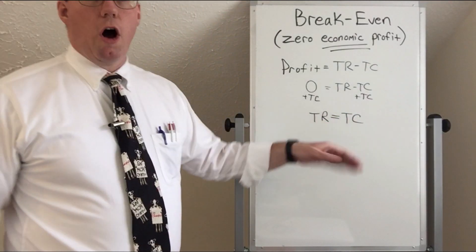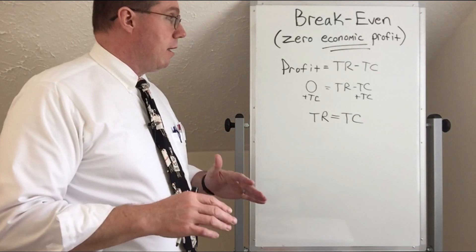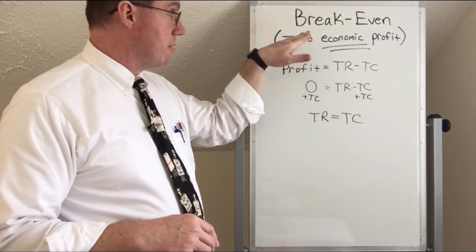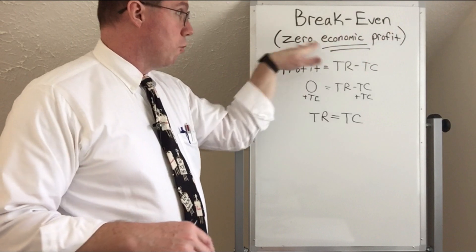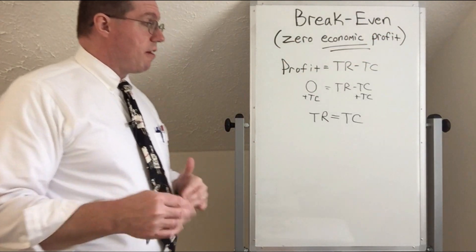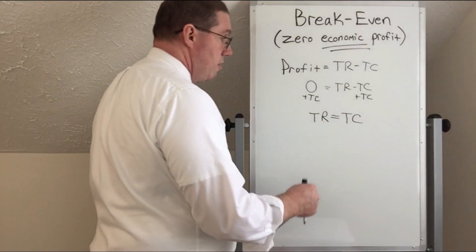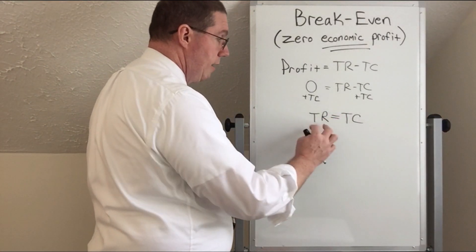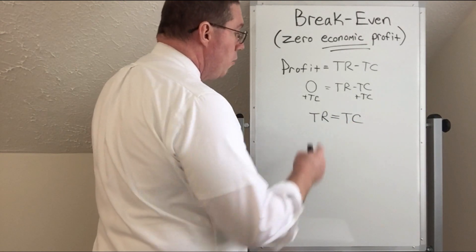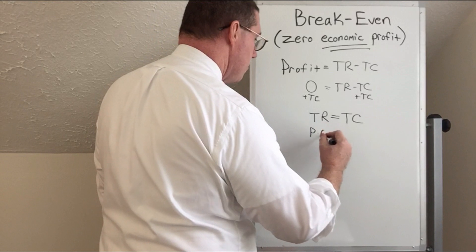So when revenues and costs are equal, the business or firm will be experiencing zero profit, or zero economic profit. Over the last several lessons we've learned how to break down these two ideas of total revenue and total cost. We know that total revenue is the same thing as price times quantity.